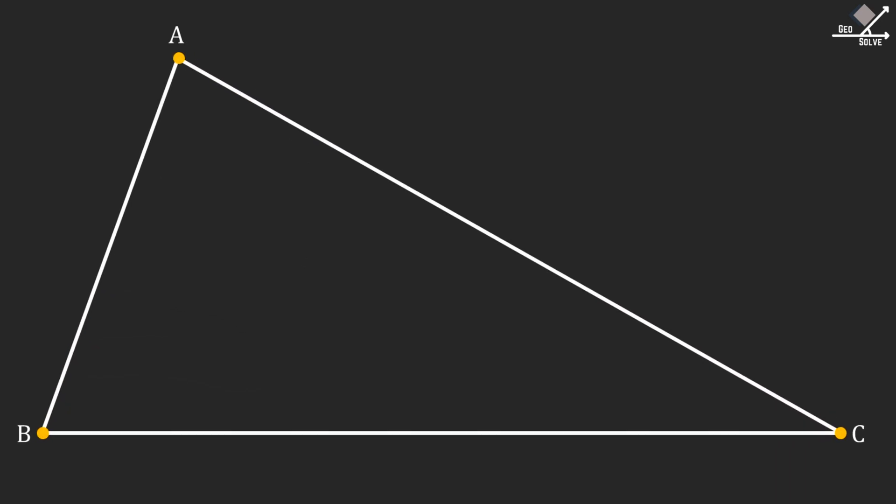ABC is a triangle. Line segment AF is a median joining vertex A to midpoint of line segment BC. Line segment BD is the angle bisector of angle B and it is perpendicular to line segment AF.